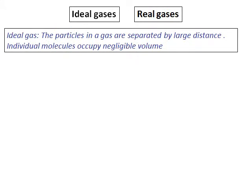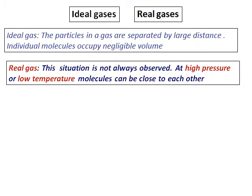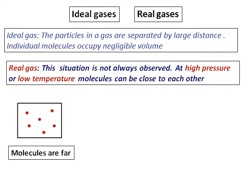Now let's compare the ideal gases and the real gases. We just learned that in case of an ideal gas, the particles in a gas are separated by large distance, individual molecules occupy negligible volume. But in a real situation, this is not true. At high pressure and low temperature, molecules can become close to each other. Consider the situation where the molecules are far, the volume is pretty big, and hence it can be close to ideal situation. But is this always true?